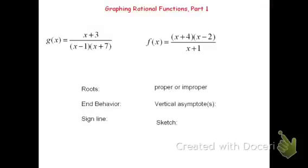In this video, we'll review how to graph rational functions. This will be part one in a two-part set of videos. In order to graph rational functions, we're going to look at the following ideas: what the roots or x-intercepts are, whether it's a proper or improper rational function, which will in turn help us define the end behavior, where the vertical asymptotes are, and then all of this will be combined to form a sign line where we can figure out whether the function is positive or negative in each interval. We'll then use all this information to sketch the function.